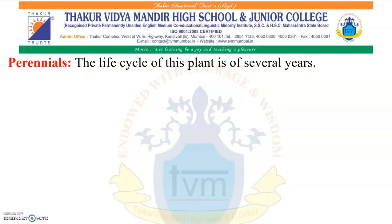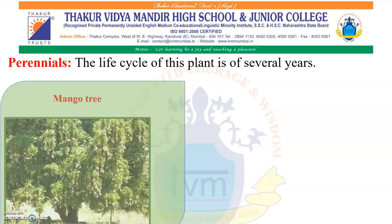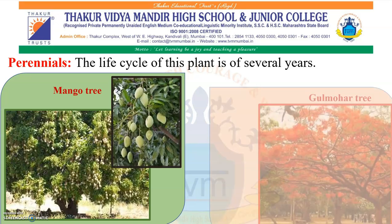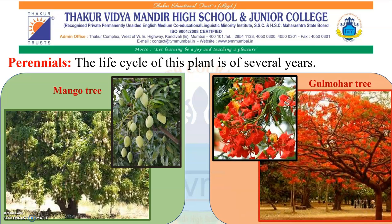Perennials: the life cycle of this plant is of several years. Mostly trees come in this category — they live for many years, like 100 to 200 years. Examples include mango tree and gulmohar tree.